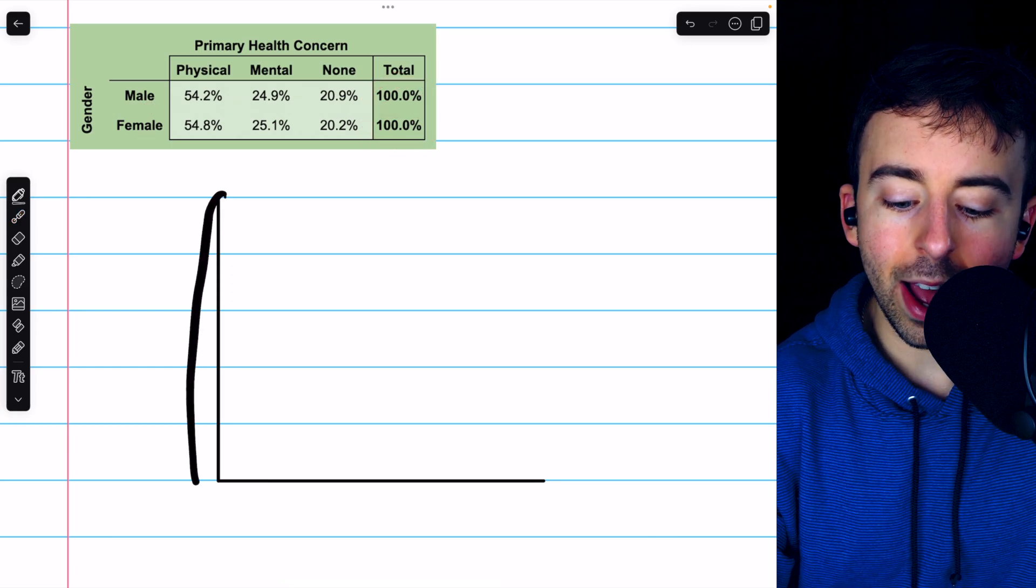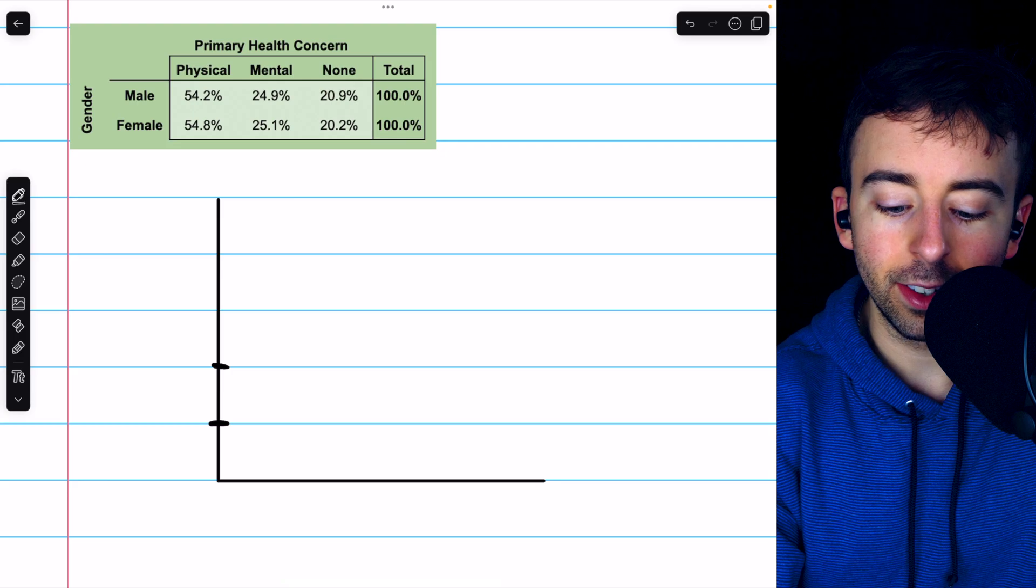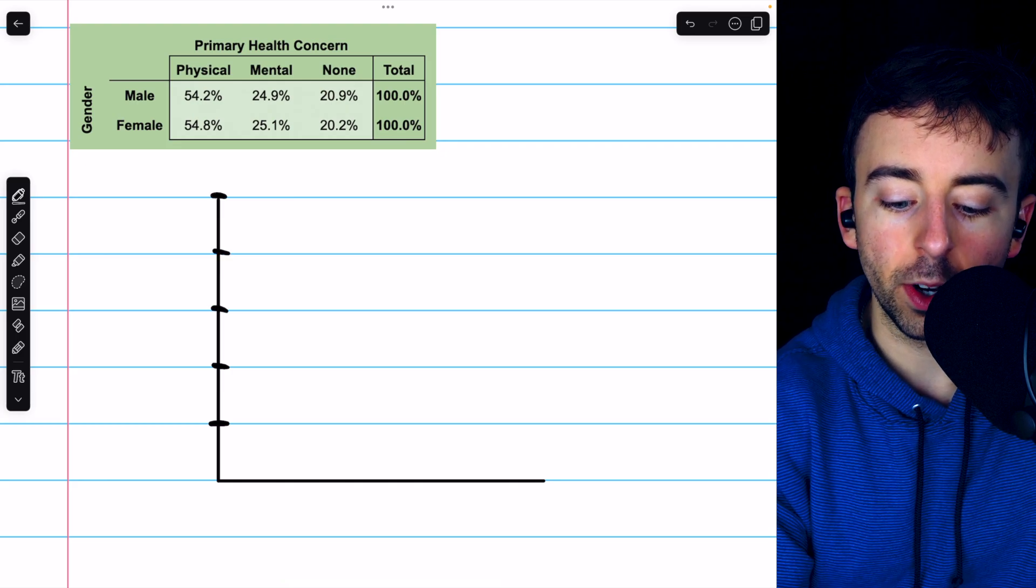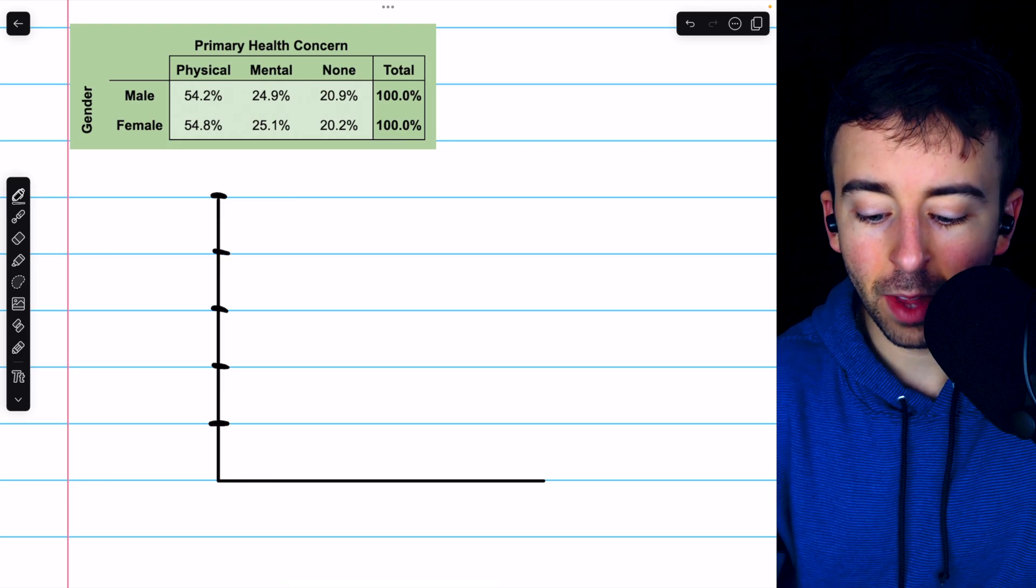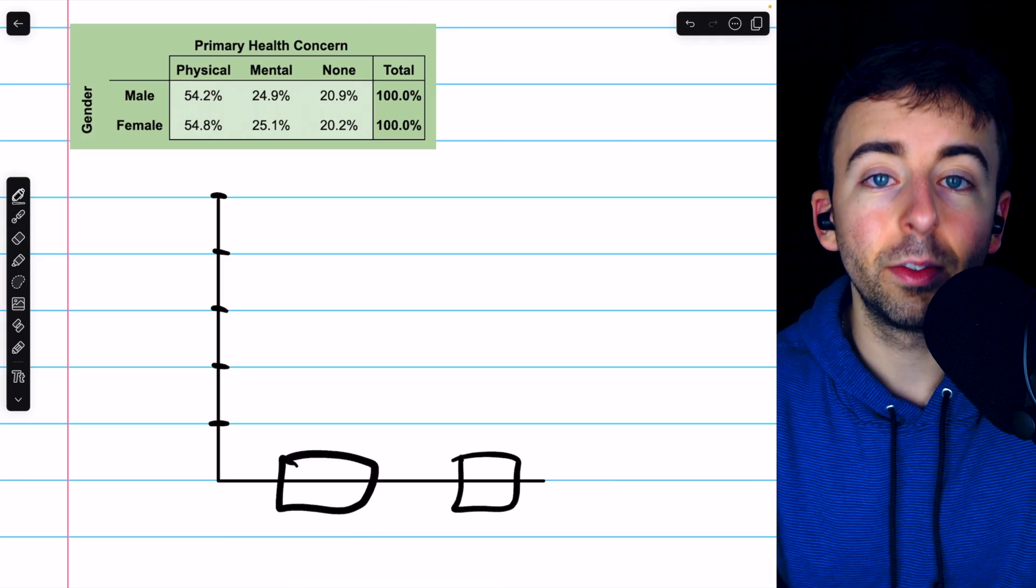So on our y-axis, we'll have percents. Let's say 20, 40, 60, 80, 100. You've got to go up to 100%. And then, of course, on the x-axis, we will have our two groups, males and females.